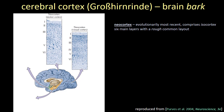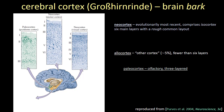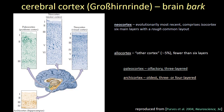First, a few words on the anatomy. As many of you know, cerebral cortex — cortex is Latin for bark. Most of this bark is neocortex, which is evolutionarily the most recent, and it comprises isocortex with six main layers with a rough common layout across the brain. The rest is allocortex or other cortex, which has fewer than six layers, such as paleocortex — for example olfactory cortex, which is three-layered — and archicortex, which is evolutionarily the oldest, such as the four-layered hippocampus.